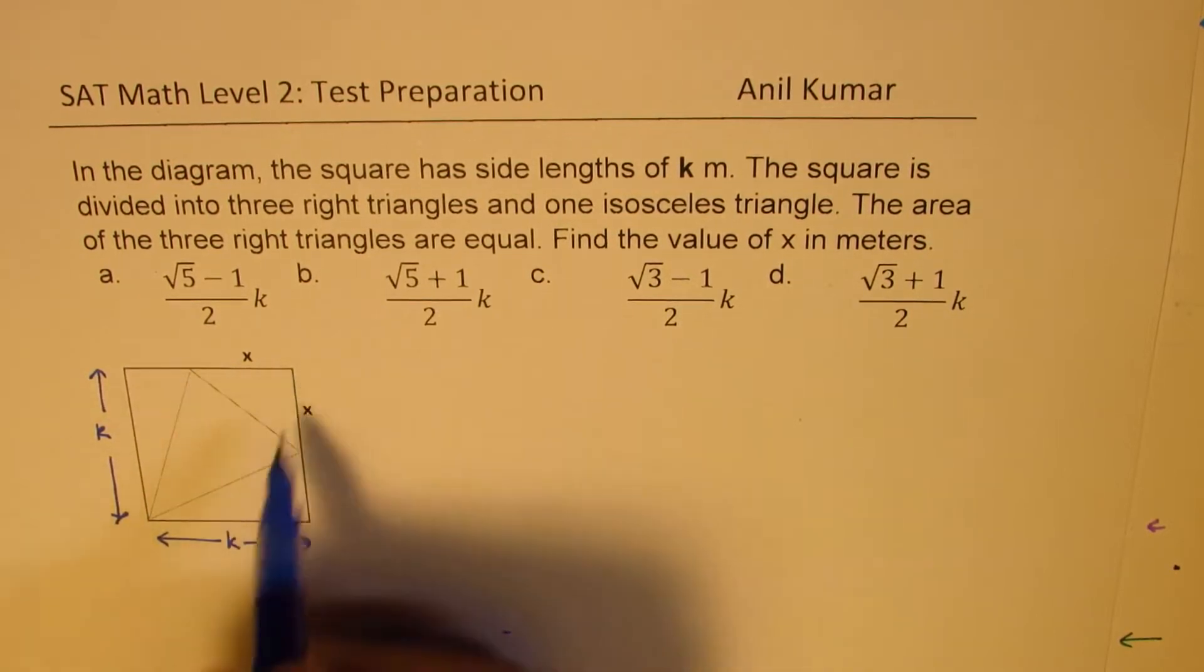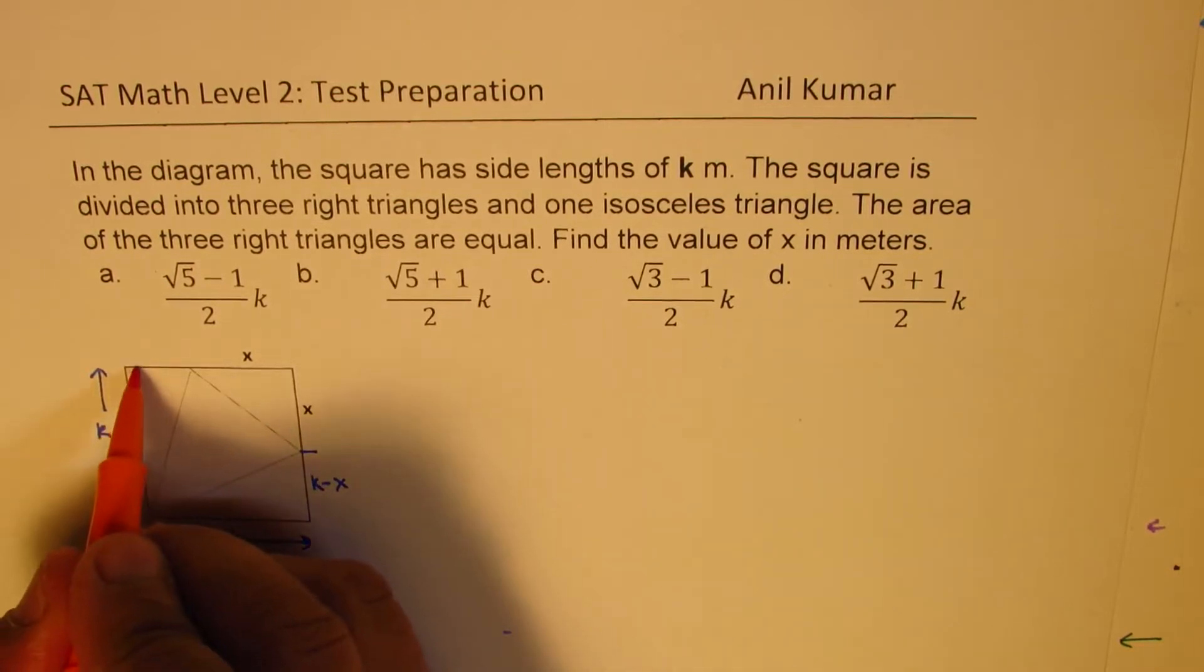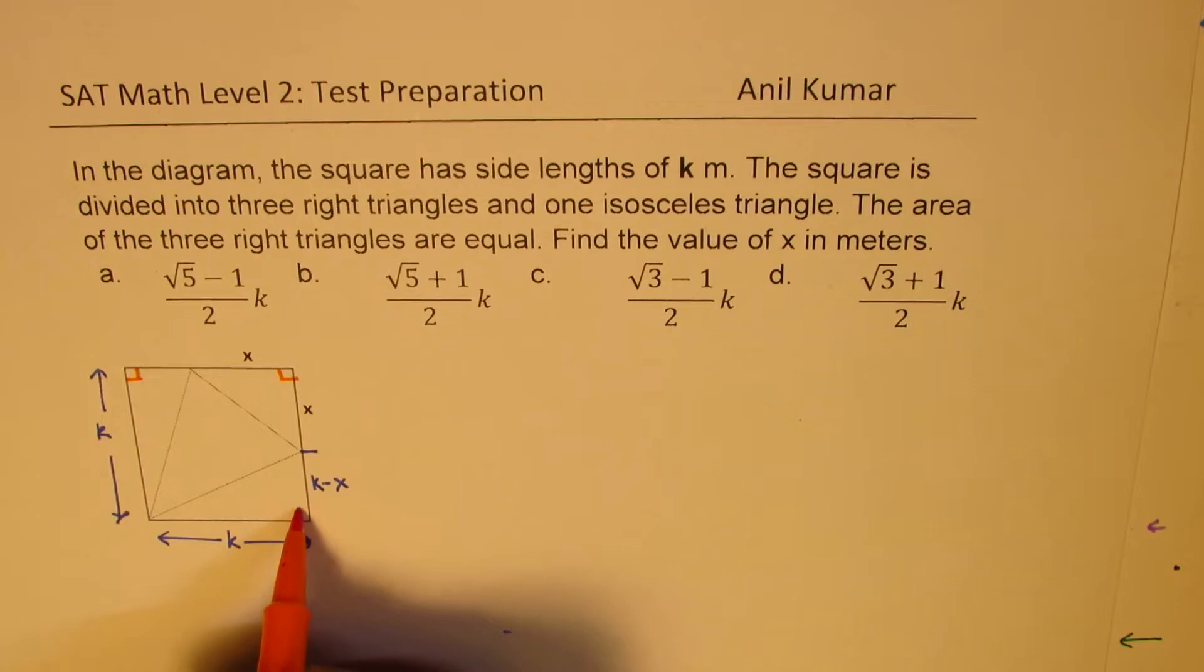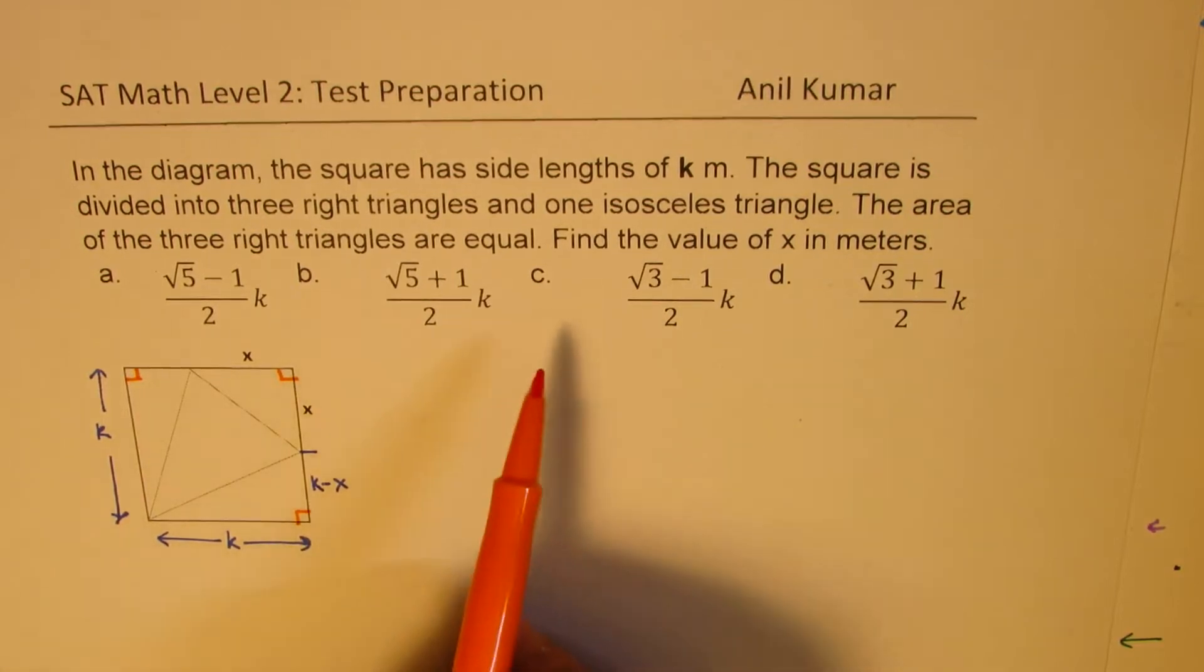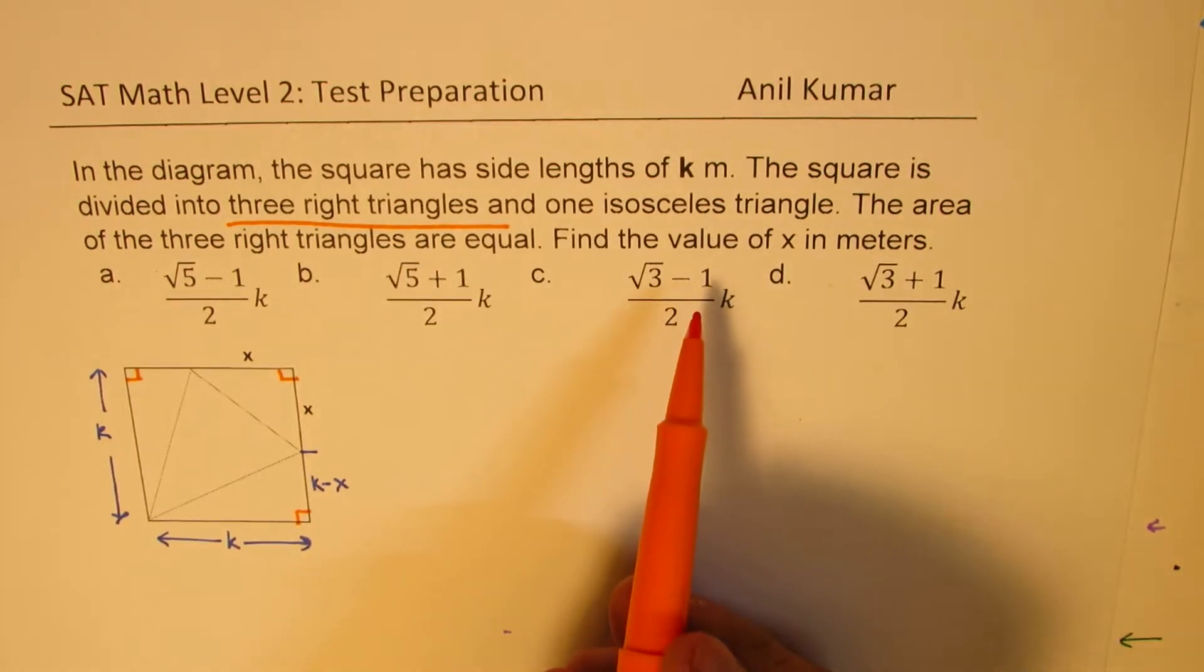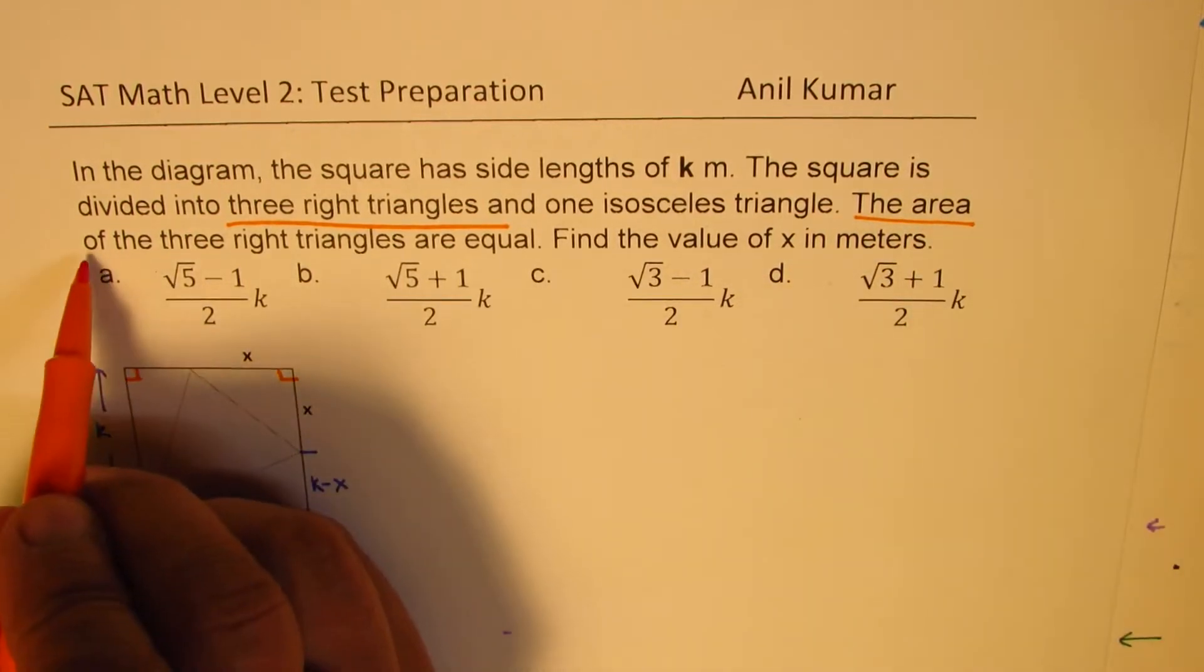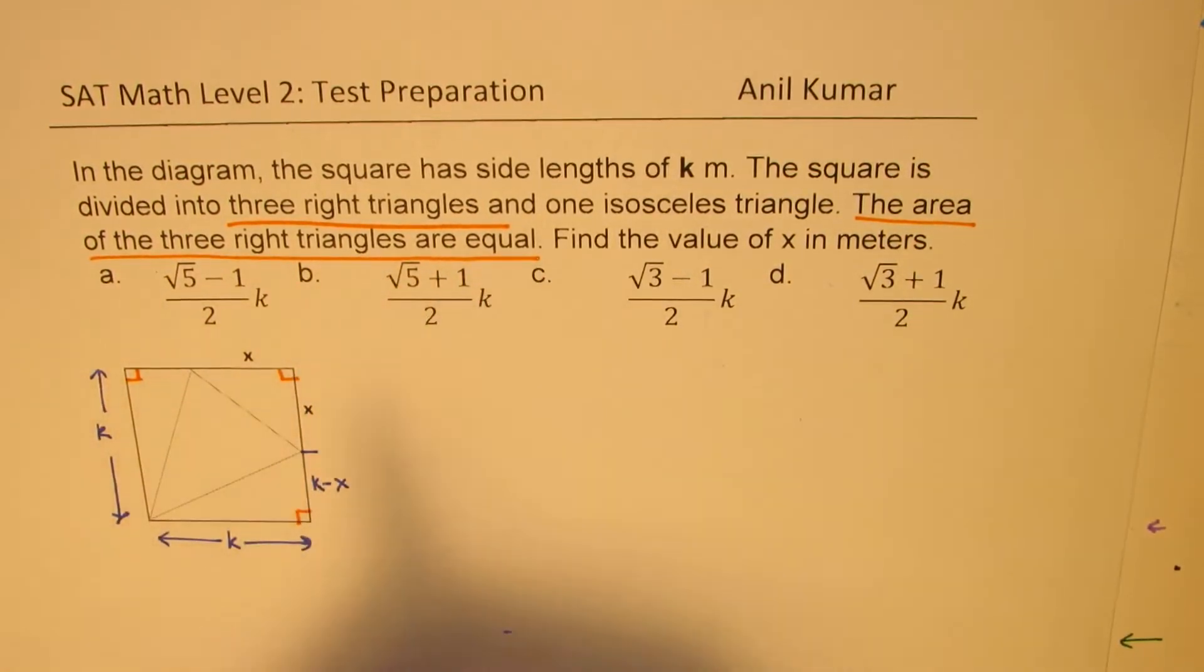Let us understand this strategy. If this side is x, then the remaining side will be how much? It will be k minus x, correct? And what we also know is that this is a square and therefore each corner is 90 degrees. We are given here that there are three right triangles, and we are also given that these right triangles are equal. The area of the three right triangles are equal. So area is equal, right? That is what is given to us. That helps you to form equations.